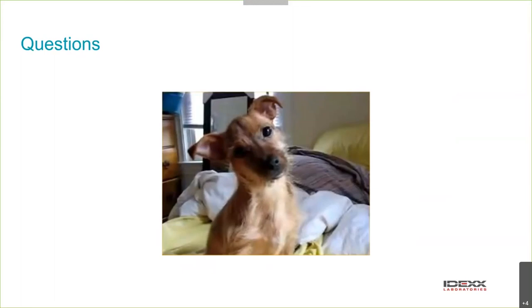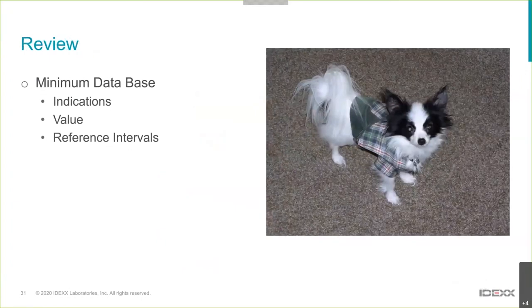That's it for the main content. To summarise: we went through the indications for the minimum database, its value, the reference intervals and their limitations, and the importance of looking at results in light of previous results — so that individual reference interval can be very helpful. And always interpret results in light of the patient. Sometimes subtle changes on the CBC or biochemistry may not be the reason the patient presented, so we need to find another cause for their particular constellation of clinical signs.